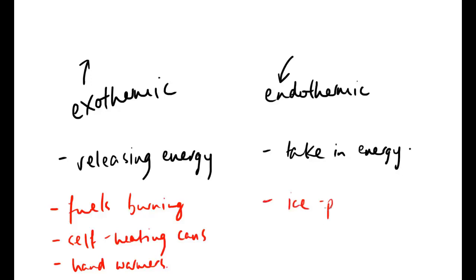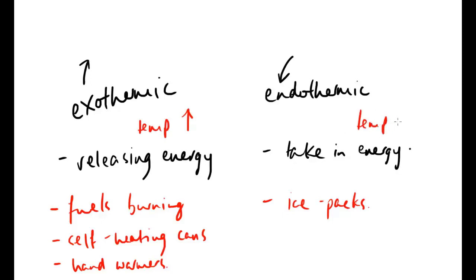Endothermic examples are slightly less common, but the key one, particularly at school age and within sport, is ice packs — the packs where you basically crush two chemicals together and it gets cold very quickly. In that case the energy is being taken in from the environment. So exothermic: energy is released and we see that as a temperature increase; endothermic: energy is taken in and we see that as a temperature decrease.